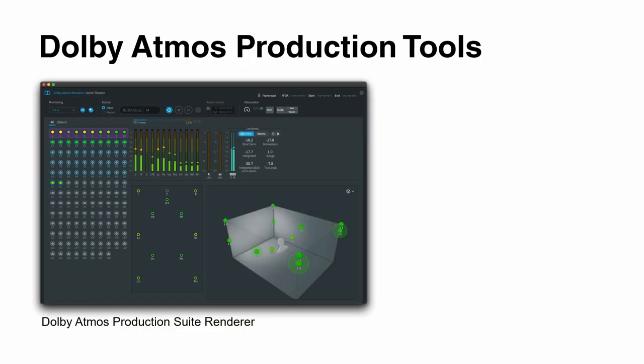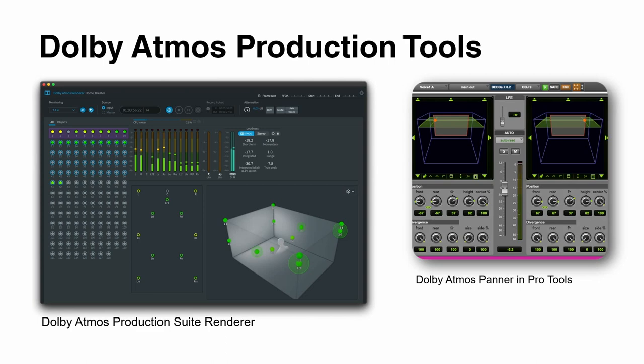Let's start with Dolby Atmos production tools, and in this particular case with the DAW Pro Tools. Pro Tools has native Dolby Atmos panning capabilities built in, either in Pro Tools Studio or in Pro Tools Ultimate. Additionally, you would still require the Dolby Atmos production suite as a software-based renderer running on the same machine, or the Dolby Atmos mastering suite, which is the rendering device on a separate machine in the network. The panning can be created right out of Pro Tools natively.